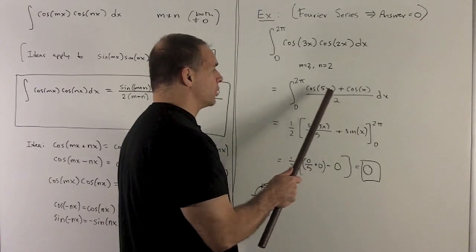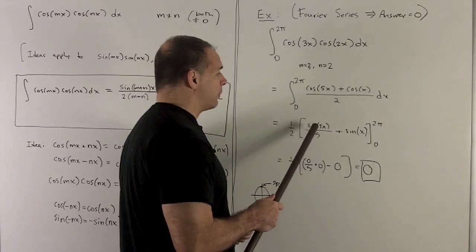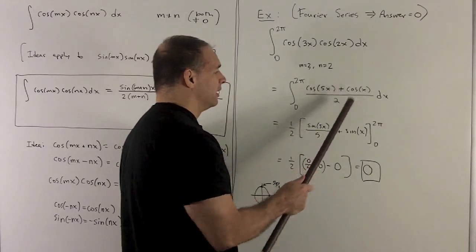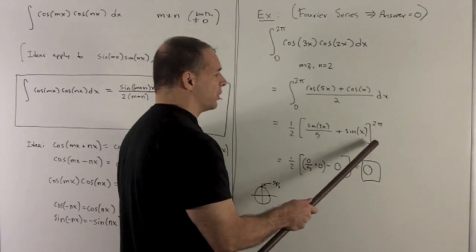So I'm left with this. And then when I do the u substitution for this guy, it's just the same as dividing by 5. So I'll wind up with sine of 5x over 5. Here I have a sine of x, and I pull the half out. And then we're going to go from 0 to 2 pi.